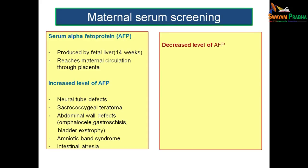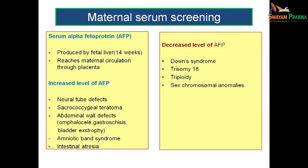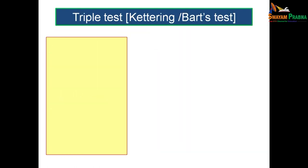Decreased levels of alpha-fetoprotein are seen in Down syndrome, trisomy 18, triploidy, and other chromosomal anomalies.